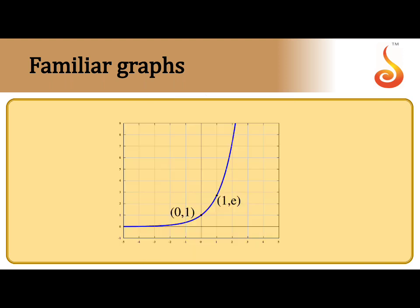This is called an exponential graph — the graph of x versus e power x, where e is equal to 2.71. When you put x equal to 1, you get a corresponding e value. These are some of the graphs we may be familiar with. Now let us see one by one how a graph learned in mathematics can be used in physics.